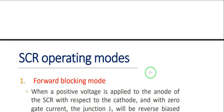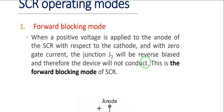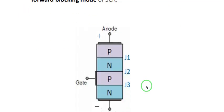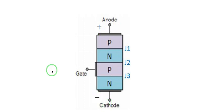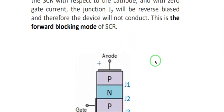Now let's go to the operating modes of an SCR. First we have the forward blocking mode. The forward blocking mode is when positive voltage is applied to the anode of the SCR with respect to the cathode, and there is no gate current applied to the gate terminal. In this case, anode is positive, cathode is negative, gate current is not used. Junction J2 will be reverse biased and therefore the device will not conduct — the SCR is in the forward blocking mode and is not conducting.